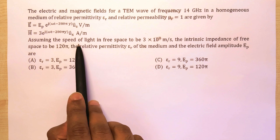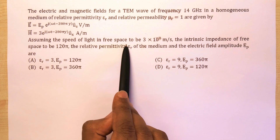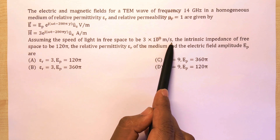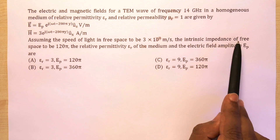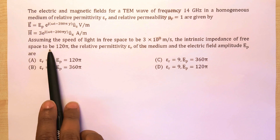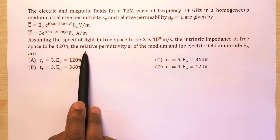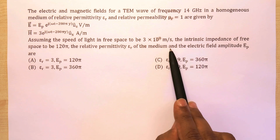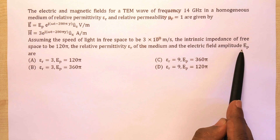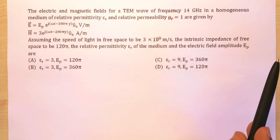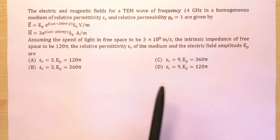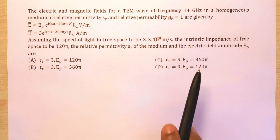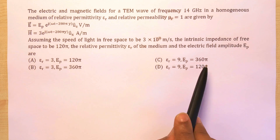Assuming the speed of light in free space to be 3×10⁸ m/s and the intrinsic impedance of free space to be 120π, we need to find the relative permittivity εr of the medium and the electric field amplitude Ep. There are four options provided.